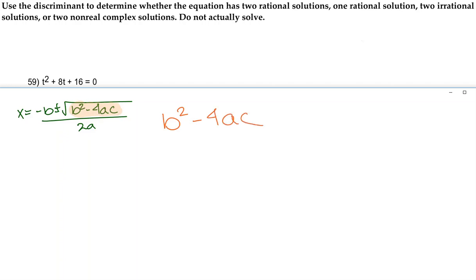The b, the a, and the c comes from the form that it's in, which is ax squared plus bx plus c, where here our a is 1, our b is 8, and our c is 16.